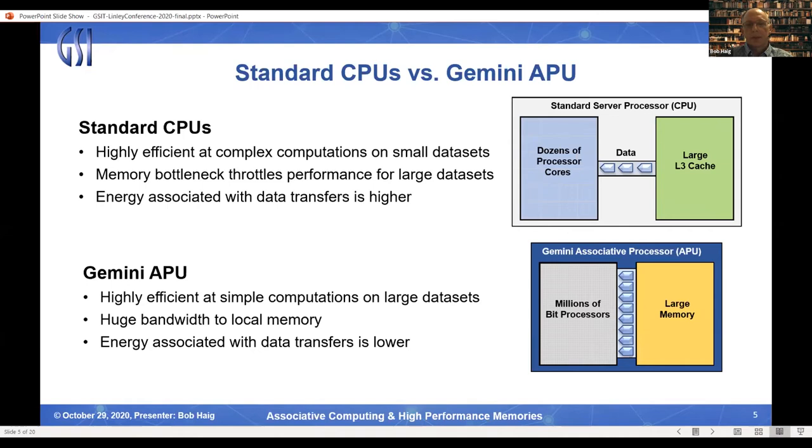GSI's goal was to develop a processor that is highly efficient at simple, massively parallel computations on large data sets, both from a performance and power standpoint. We address this by implementing millions of simple, programmable bit processors that perform Boolean operations on individual data bits. The bit processors utilize in- and near-memory processing techniques to perform the Boolean operations, which can be sequenced over multiple cycles to perform more complex computations. The bit processors are tightly coupled to distributed local memory to provide huge data bandwidth between them. And because the distance between a bit processor and its local memory is very short, the energy required to transfer data between them is very low compared to standard CPUs.